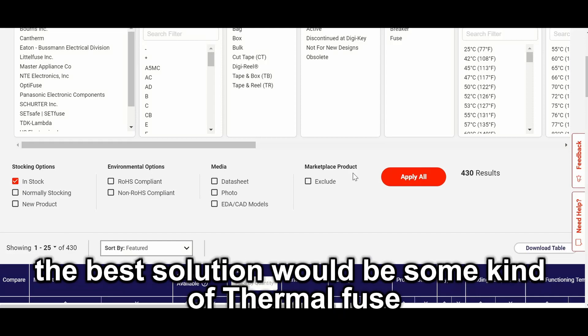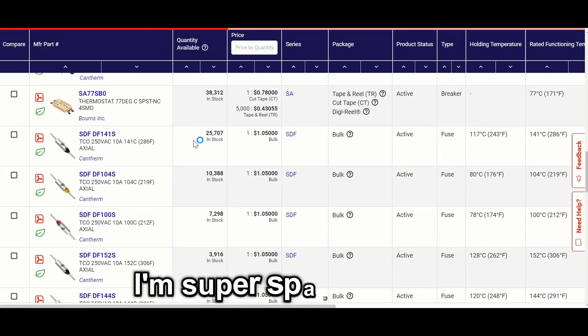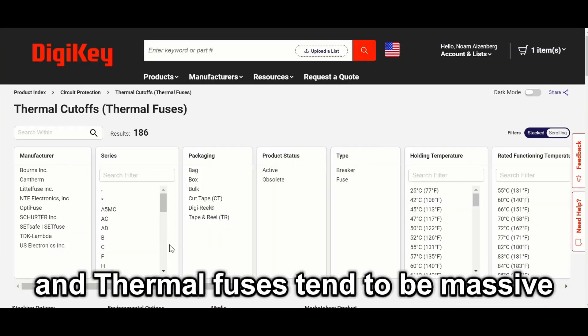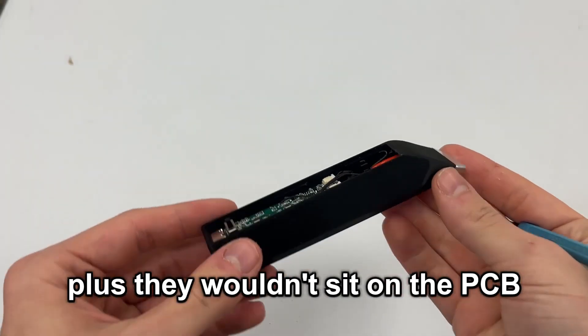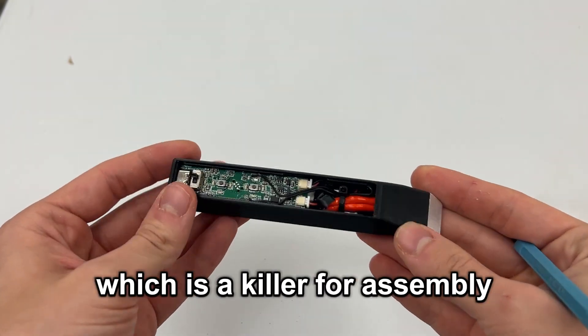The best solution would be some kind of thermal fuse. But I quickly tossed that aside since I'm super space constrained and thermal fuses tend to be massive. Plus, they wouldn't sit on the PCB. I would have to wire it to the heating tip, which is a killer for assembly.